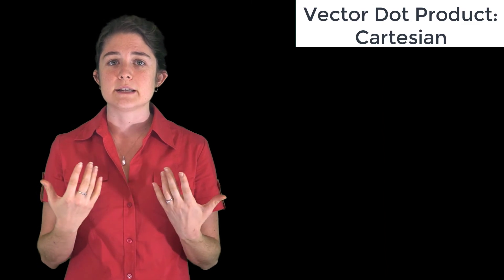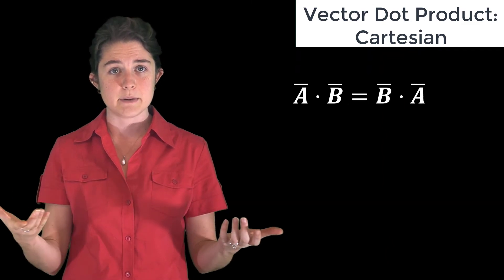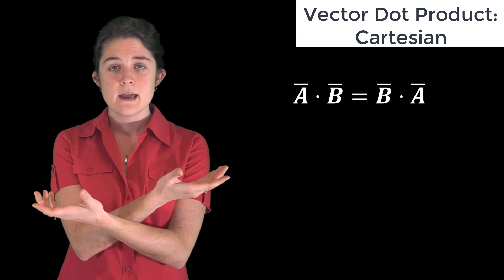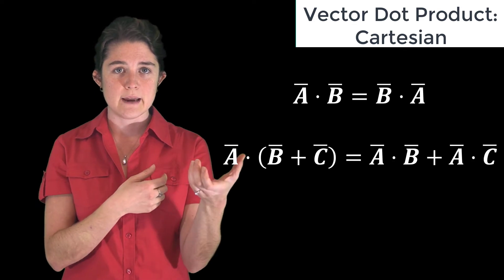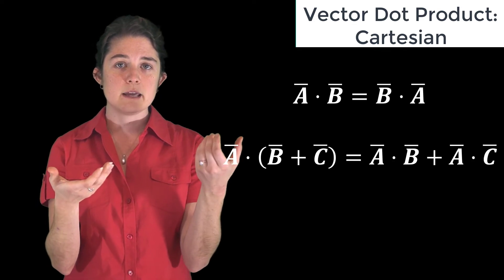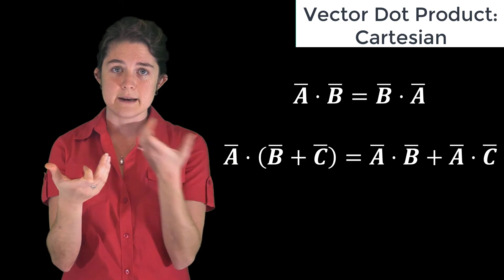We should also note that the dot product is commutative, so a dot b equals b dot a, and it's distributive, so a dot (b + c) equals a dot b plus a dot c.